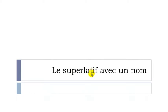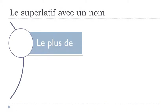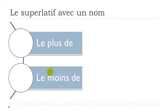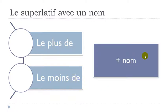We saw in the previous video how to construct it with an adjective or an adverb. This will be a short lesson, but if we want to construct this superlative form with a noun — avec un nom — it's quite simple because we don't really need to care about whether it's masculine, feminine, or plural. You just put 'le plus de' or 'le moins de' — 'the most' or 'the least'.